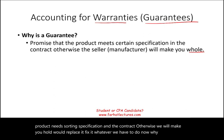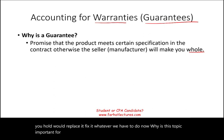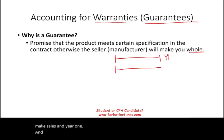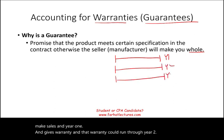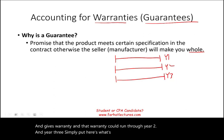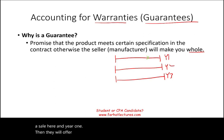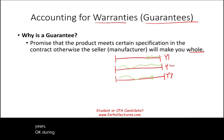Why is this topic important for revenue recognition? Because companies might make sales in year one and give a warranty, and that warranty could run through year two and year three. Simply put, the company will make a sale in year one, then offer a guarantee covering the next two years.